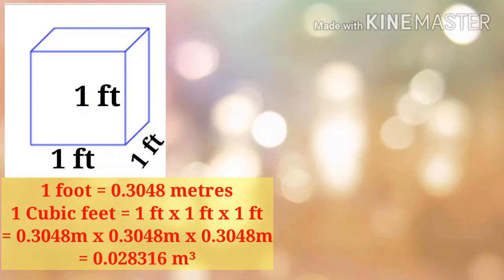To understand Qsec, let us consider a cube having length 1 foot, breadth 1 foot, and height 1 foot. One foot is equal to 0.3048 meters. So 1 cubic foot is 1 foot × 1 foot × 1 foot, which equals 0.028316 cubic meters.